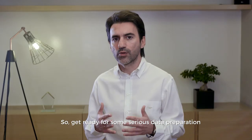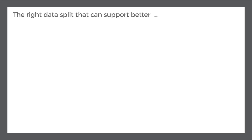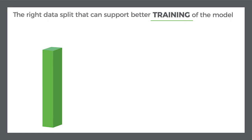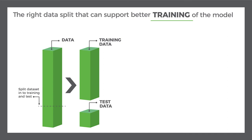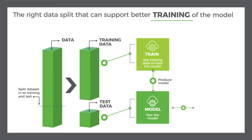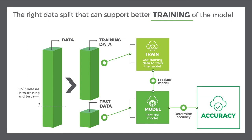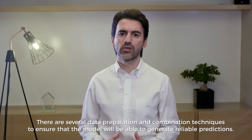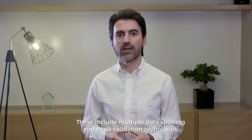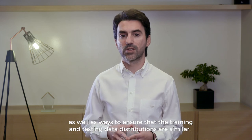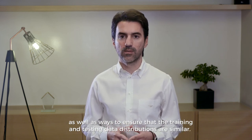So, we are in for some serious data preparation, splitting and recombination work. This is typically done by splitting the real historical data into training and testing subsets. The algorithm is parameterized using the training data and then its predictive capabilities are evaluated using the testing data. There are several data preparation and combination techniques to ensure that the model will be able to produce reliable predictions. These include multiple data splitting and cross-validation techniques, as well as ways to ensure that the train and test data distributions are similar.